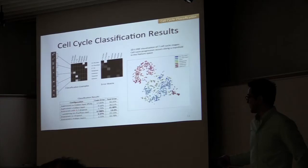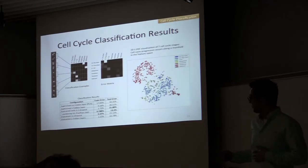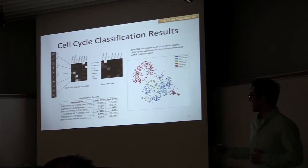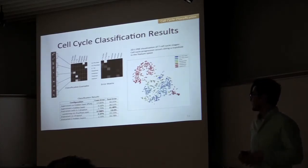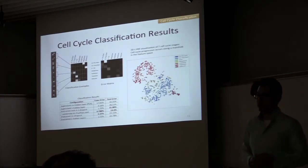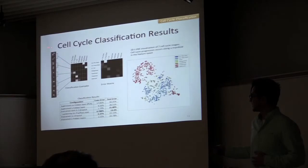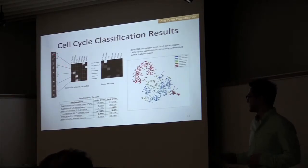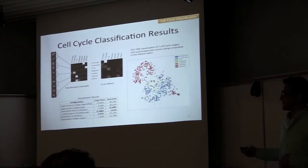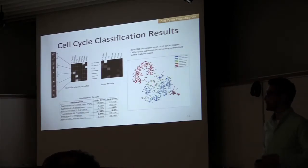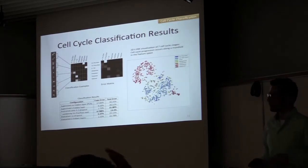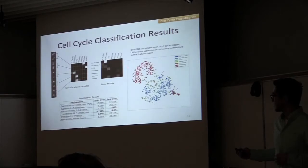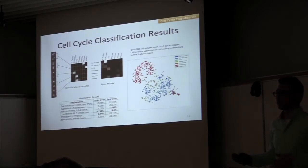The results from this experiment show pretty good classification accuracy. For the network pre-trained on unlabeled data and then fine-tuned with the classification layer, the test error was 21.8%, where most errors are due to G1 early stage cells being classified as G1 post-start stage. If we combine those two into one class, we achieve a 13.3% test error. We can also visualize the feature space in two dimensions using t-distributed stochastic neighbor embedding (t-SNE), where we can see that cell cycle progression occurs along a manifold — a good indication that the feature space is descriptive of cell cycle stage.